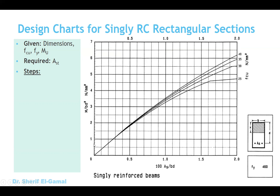The vertical axis of the chart gives the value of M over BD squared, where M is the ultimate moment. B and D represent the cross section dimensions, and the value should be in Newton per millimeter squared. On the horizontal axis we have the tension steel reinforcement ratio, starting from 0.5%, 1%, and so on. We use these values to get the reinforcement ratio and therefore calculate the area of the tension steel. The chart has four different curves representing the concrete compressive strength FCU — 25, 30, 35, and 40 MPa.